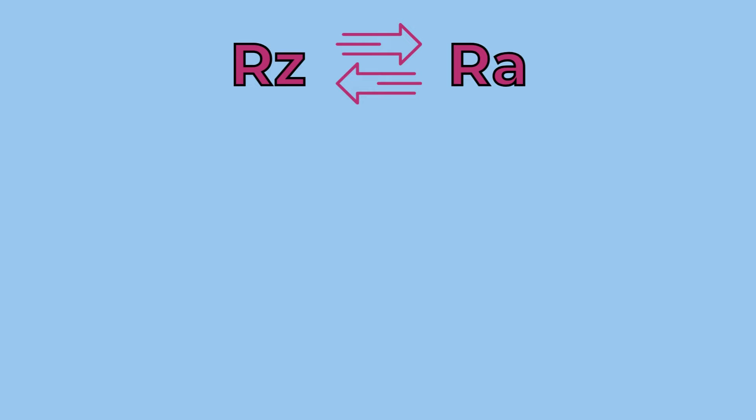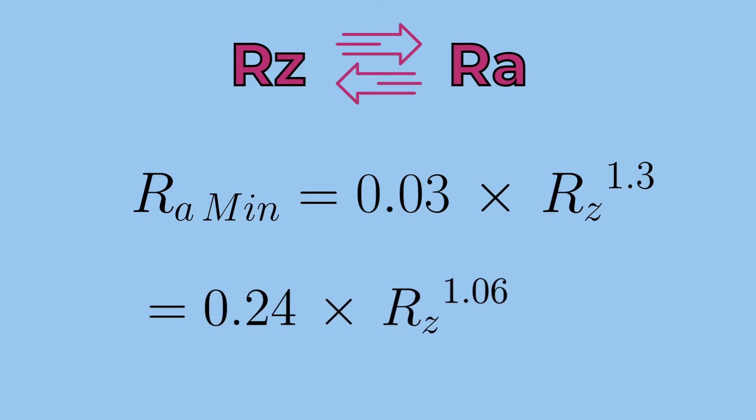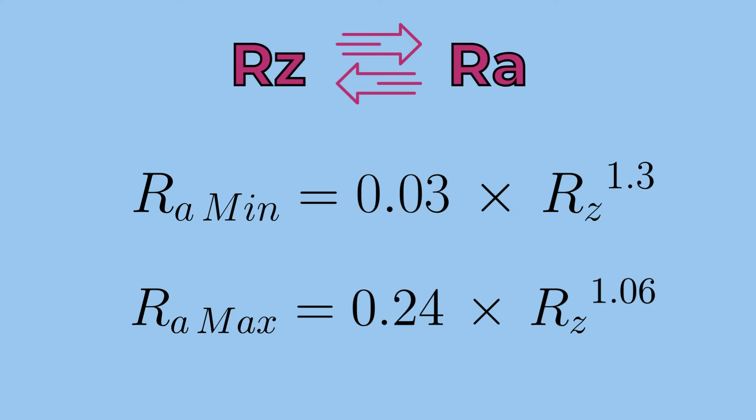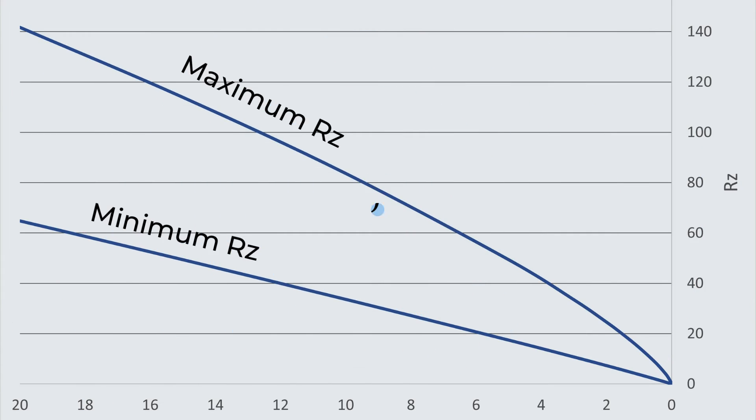We have two conversion formulas for RA to RZ. RA min equals 0.03 times RZ to the power of 1.3. And RA max equals 0.24 times RZ to the power of 1.06. Plotting the formulas allows us to find the RA range for each RZ value. You can also see from the chart that inaccuracies grow as RA and RZ values increase.